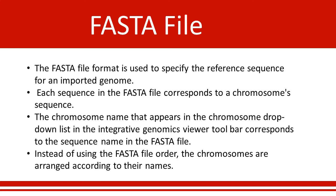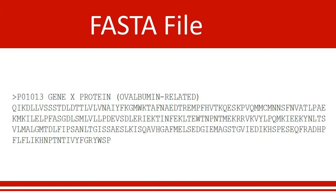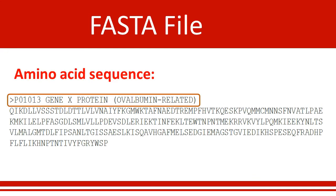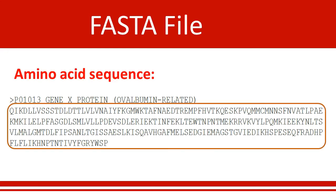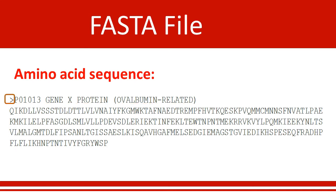Instead of using the FASTA file order, the chromosomes are arranged according to their names. In FASTA format, a sequence starts with a single line of description and is then followed by lines of sequence information. The description line is distinguished from the sequence data by a greater-than symbol at the beginning.